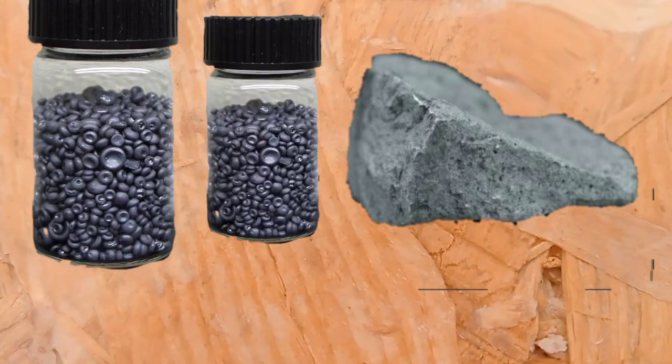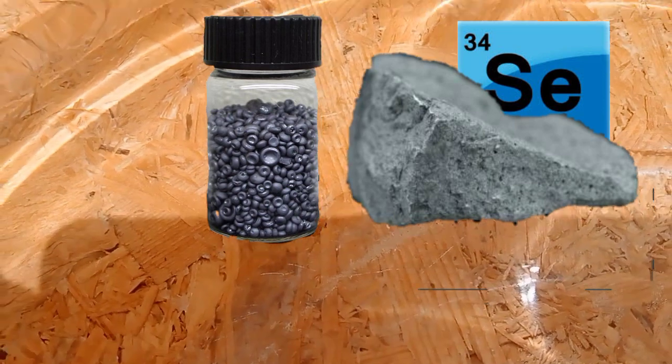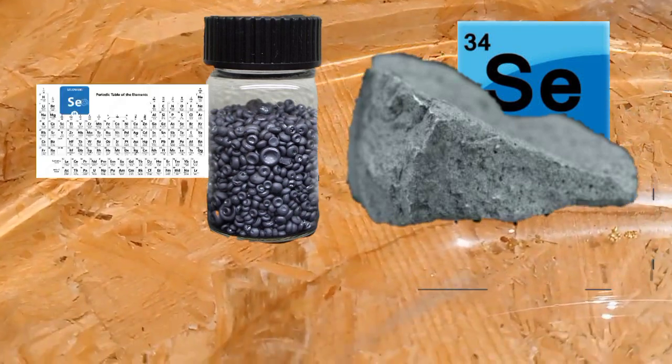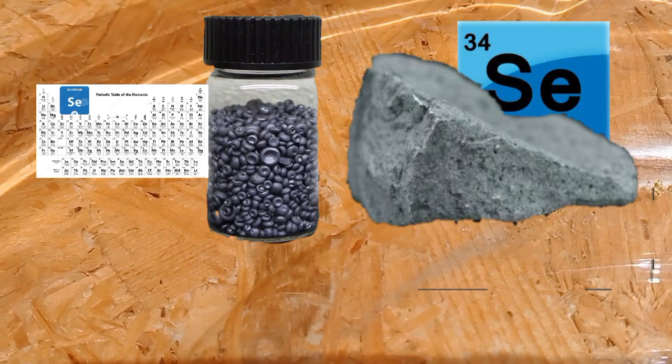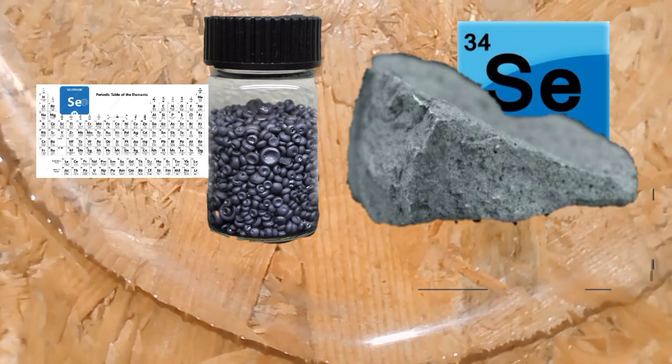Heat your powdered acid under the blowpipe on a charcoal block. If the acid contains selenium, it will smell like rotten radishes, a musty decaying odor, and give off a dirty brown smoke.